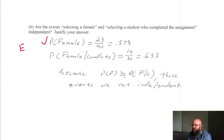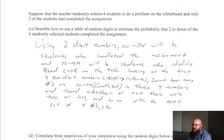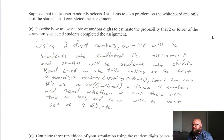Now we get into Part C. It asks: suppose the teacher randomly selects four students to do a problem on the whiteboard and only two had completed their assignment — describe how to use a table of random digits to estimate the probability that two or fewer of the four randomly selected students completed the assignment. In their explanation, they said two-digit numbers 00 to 74 will be students who completed, and 75 to 99 will be students who didn't. That threw them off a little bit, because I'm not sure why they used those bigger numbers.